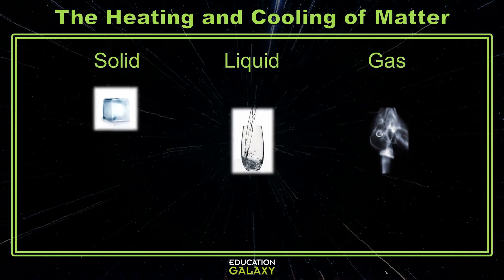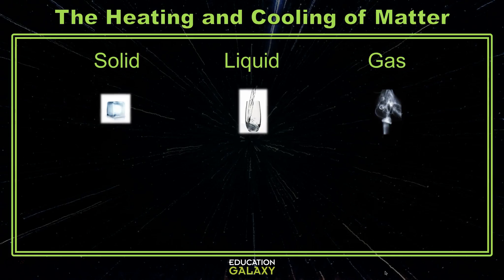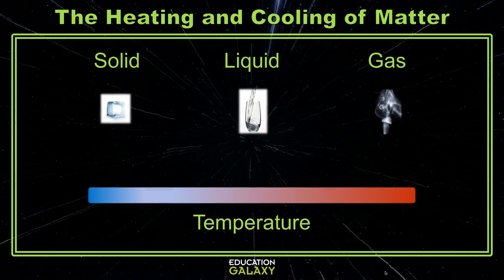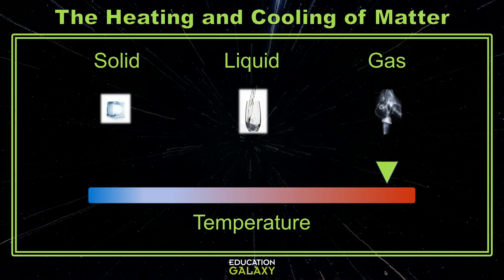Matter can change between the states if you heat it or cool it. In other words, you can change the temperature of the matter. To change solid ice into a liquid, you raise the temperature. If you raise the temperature even further, you will change liquid water into a gas.